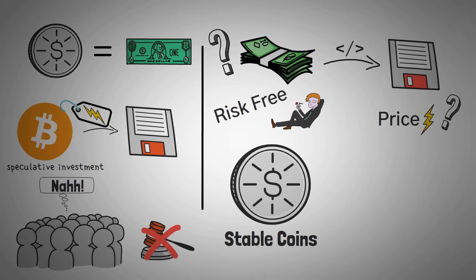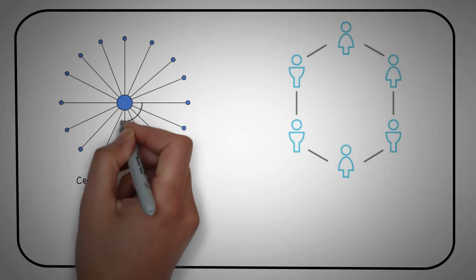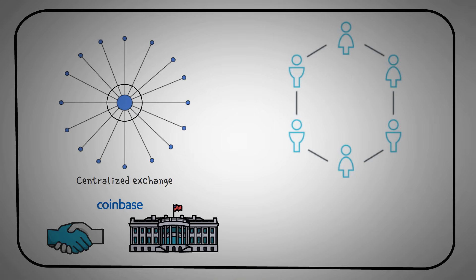Before we get too deep into stablecoins, you first need a refresher on the differences between a centralized exchange and a decentralized exchange. A centralized exchange is an exchange that is owned by one entity, like Coinbase, but they allow you to buy and sell cryptocurrencies. Since they are a company, they are technically regulated by the government that they answer to.